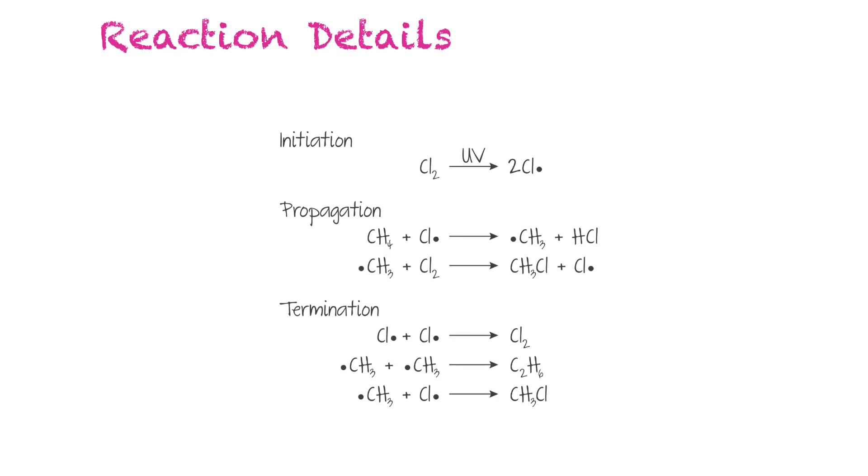Then finally, you get to the termination step. So a few things can happen. Two chloride radicals can bump into each other to make chlorine again. Two methyl radicals could bump into each other and create ethane. Or a methyl radical and a chloride radical can interact and form methyl chloride, which is the substitution reaction that we were talking about.